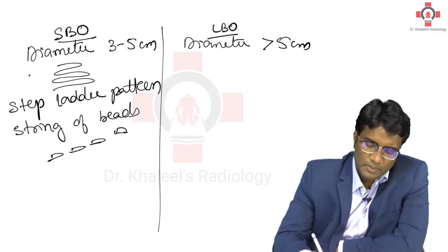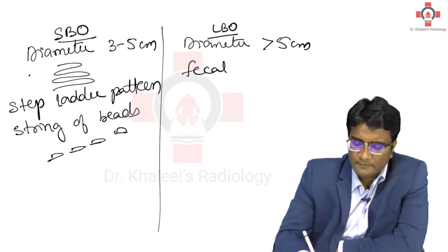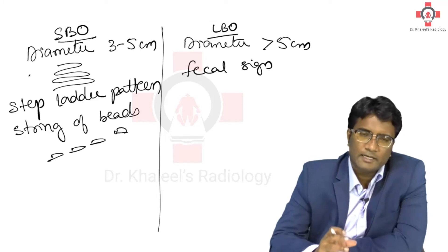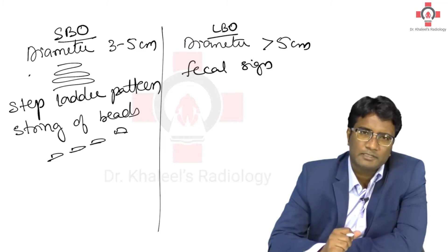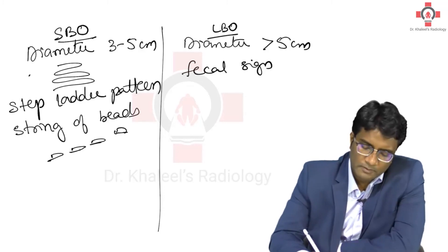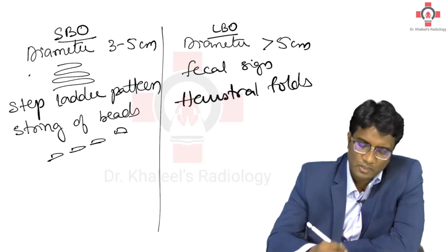In large bowel obstruction, you will see a fecal sign — a mottled appearance of the air, with dilated bowel showing mottled air because of fecal matter inside. Another important finding in large bowel obstruction is the presence of haustra folds.